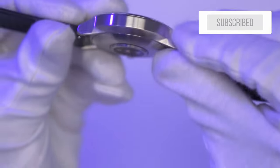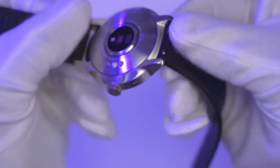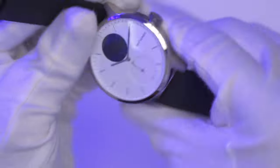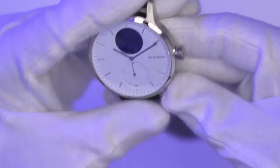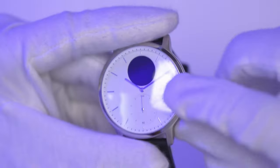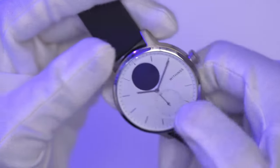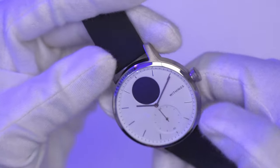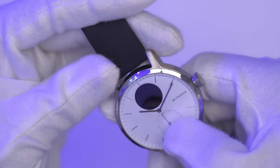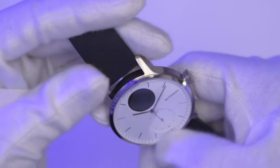The entire watch has this nice brushed finish pretty much throughout. The only areas that are polished are the hand on the sub dial and then all the indices—those are all polished as well.